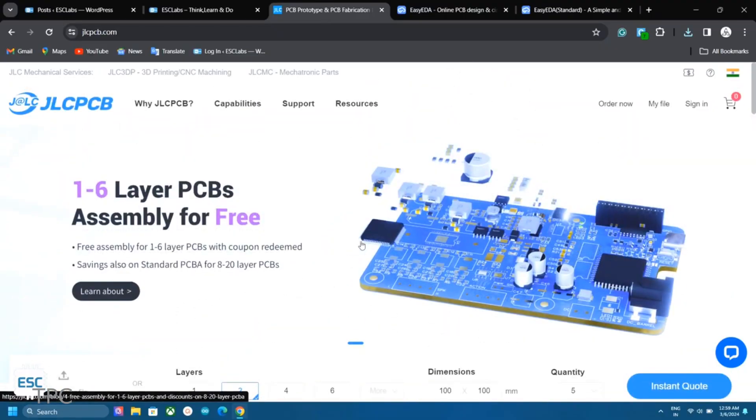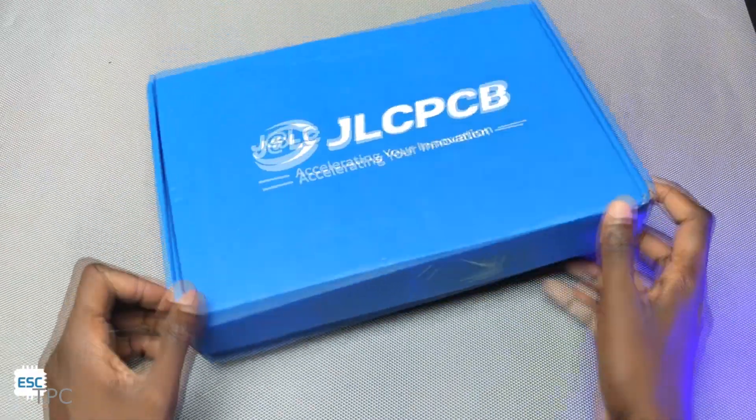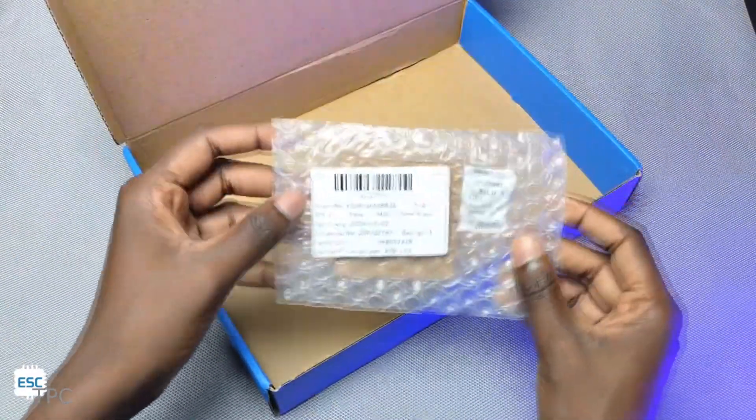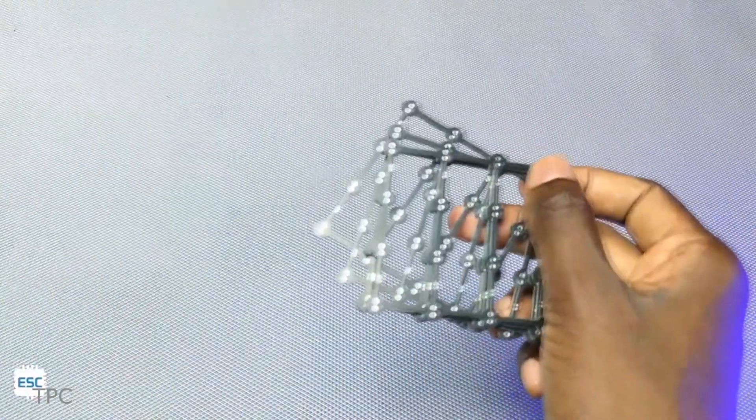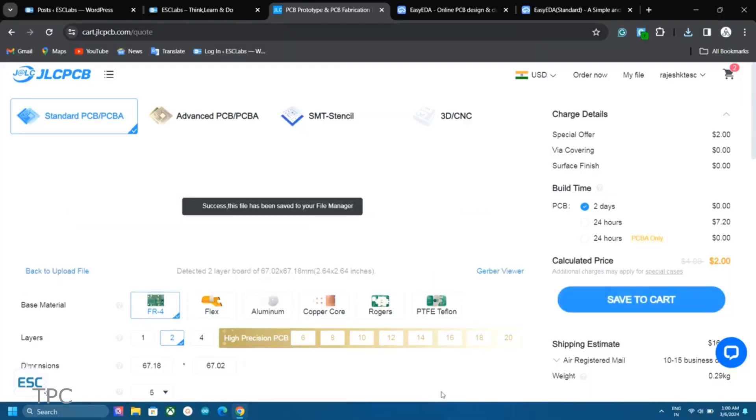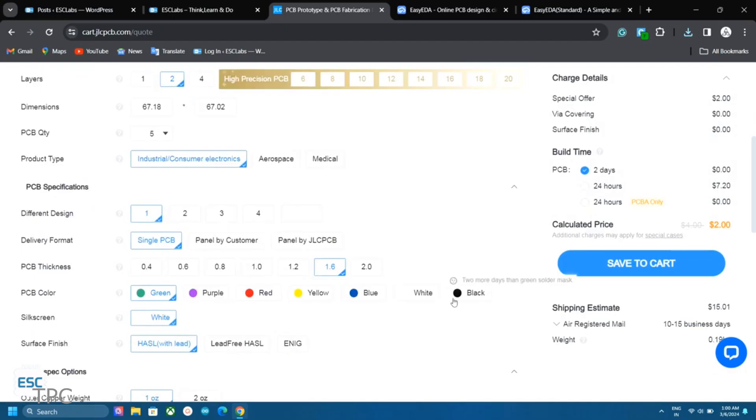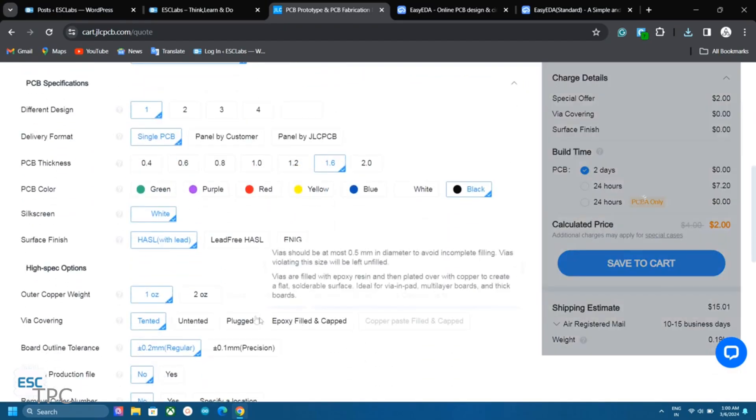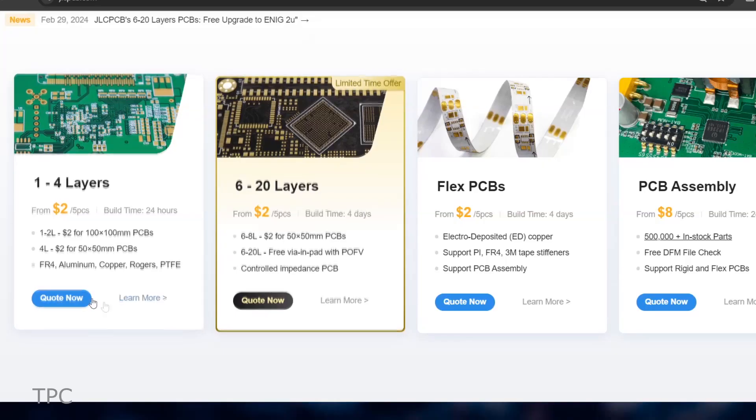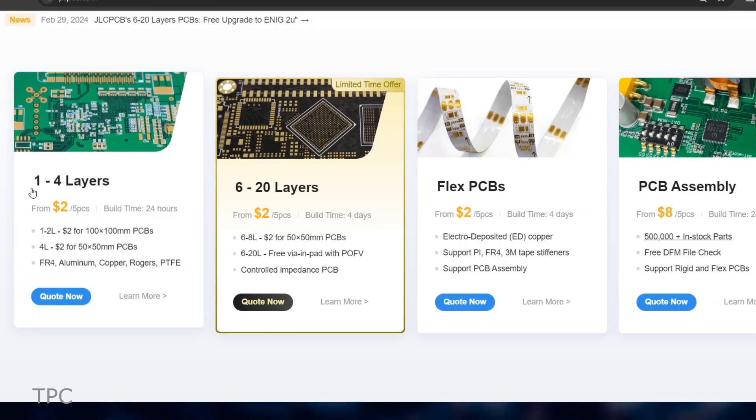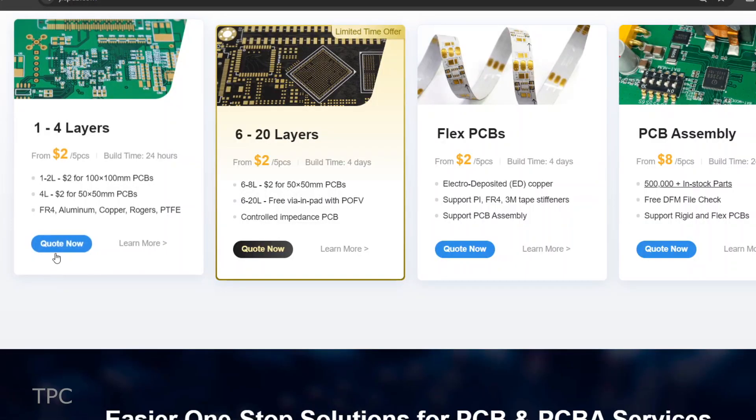To fabricate the PCBs, he relied on JLCPCB, known for offering high-quality PCBs at a low cost with fast delivery. Their simple ordering process and extensive customization options provide better control over design specifications and ensure optimal production standards. They offer five PCBs of up to four layers for just $2 with a build time of 24 hours. You can find more details in the description.